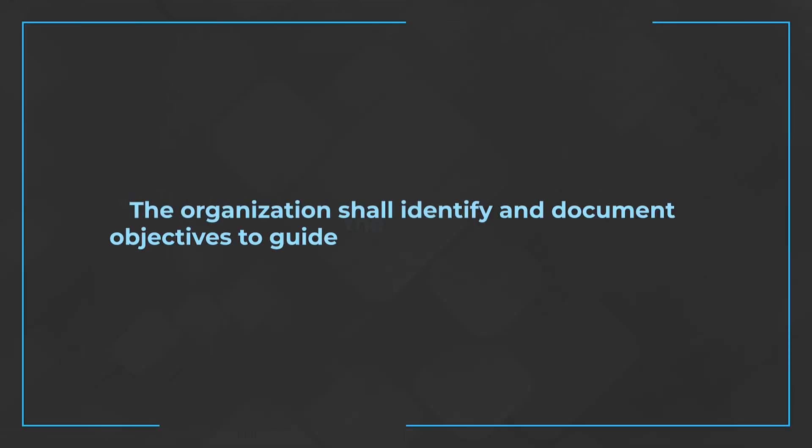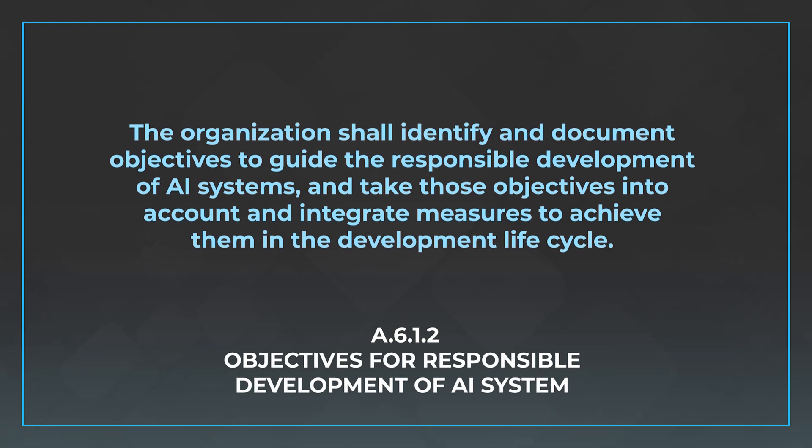The two controls here are A.6.1.2, objectives for responsible development of AI systems. This is a subjective thing, but you need to determine in your own terms what responsible development means within your organization — what does it mean to use AI responsibly — and this needs to be defined by leadership. The control says the organization shall identify and document objectives to guide the responsible development of AI systems and integrate measures to achieve them in the development life cycle. Basically, you need to identify those overarching goals that people implementing AI systems can use to determine if they're using the systems responsibly.